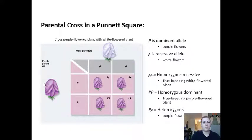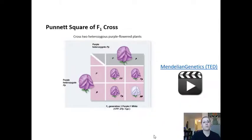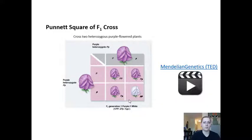Let's apply the Punnett square to Mendel's experiment. On the top we have a homozygous recessive parent for white flowers, and on the left a homozygous dominant parent for purple flowers. The resulting four offspring options are all the same — all heterozygous purple-flowered plants. But if we take that F1 generation and cross two heterozygotes, we end up with one quarter homozygous dominant purple, one half heterozygous purple, and one quarter homozygous recessive white-flowered plants.